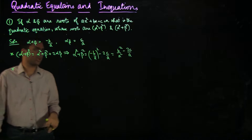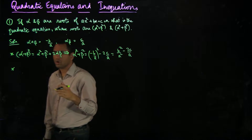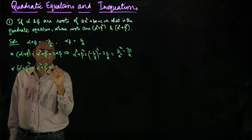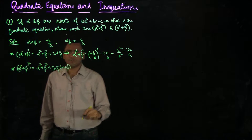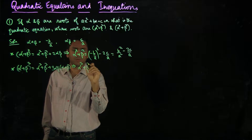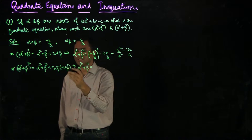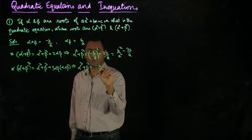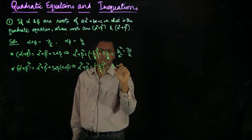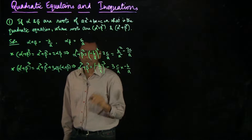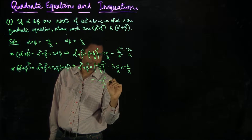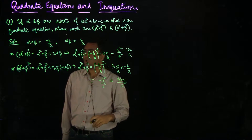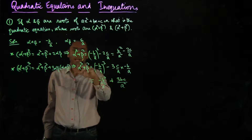Similarly, to compute alpha cubed plus beta cubed, we invoke another identity: (alpha + beta)³ = alpha³ + beta³ + 3αβ(alpha + beta). So alpha cubed plus beta cubed equals (alpha + beta)³ minus 3αβ(alpha + beta). Substituting, this is (−B/A)³ minus 3(C/A)(−B/A). That gives minus B cubed over A cubed, and since there are two minus signs, we get plus 3BC over A squared. So now we know both alpha squared plus beta squared and alpha cubed plus beta cubed.